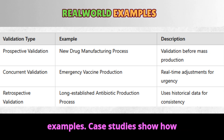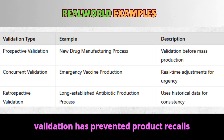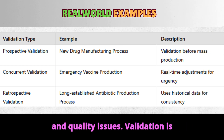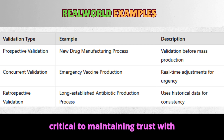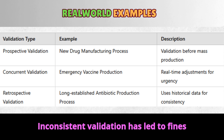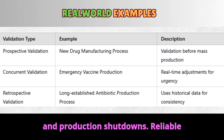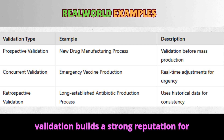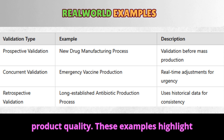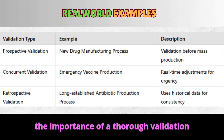Real-world examples. Case studies show how validation has prevented product recalls and quality issues. Validation is critical to maintaining trust with patients and regulatory bodies. Inconsistent validation has led to fines and production shutdowns. Reliable validation builds a strong reputation for product quality. These examples highlight the importance of a thorough validation strategy.